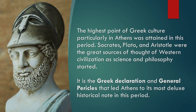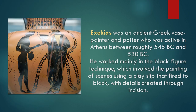It is the Greek Declaration and General Pericles that led Athens to its most deluxe historical note in this period. General Pericles was the one who led ancient Greek to appreciate science, philosophy, and art during the time of ancient Greece. Exekias was an ancient Greek vase painter and potter who was active in Athens between roughly 545 BC and 530 BC. He worked mainly in the black figure technique, which involved painting scenes using a clay slip that fired to black with details created through incision.